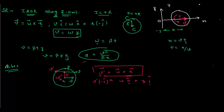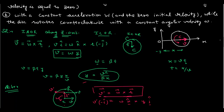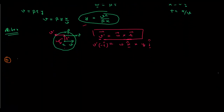Now for Part B: the disc is moving with constant acceleration w and zero initial velocity, while the disc rotates counterclockwise with constant angular velocity omega. After time t, the translational velocity of the center of mass is v = w·t. Using V = omega·y, we write omega·y = w·t.